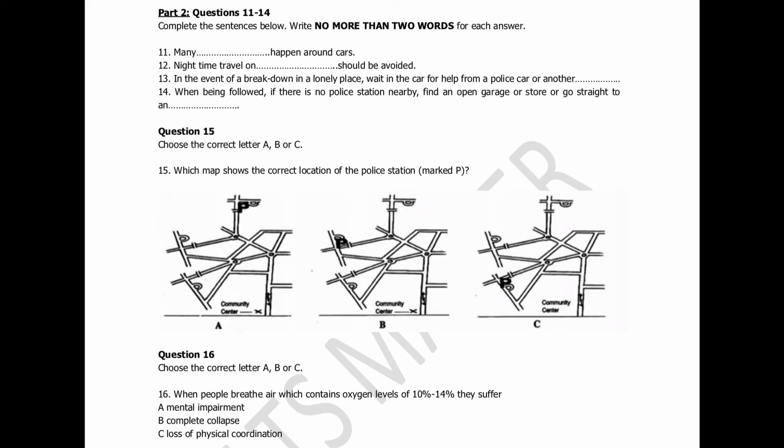Before you hear the rest of the talk, you have some time to look at questions 16 to 20. Now, listen and answer questions 16 to 20. Now, let's move on to fire safety. Before I talk to you about safety precautions and procedures, I'd like to mention some of the effects of smoke and heat on humans. There are four ingredients of fire, namely, oxygen, fuel, heat, and chain reactions. Almost all materials burn, and most household goods burn very easily.